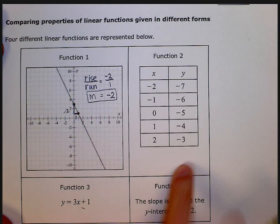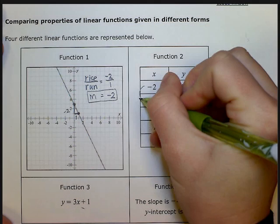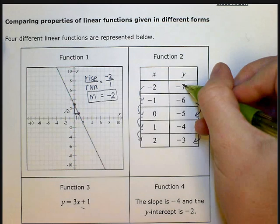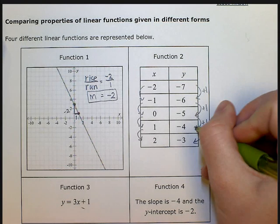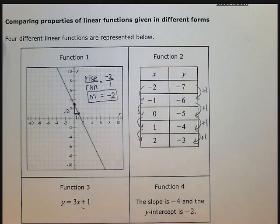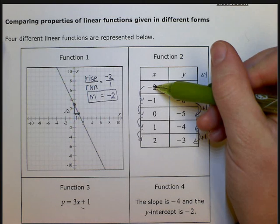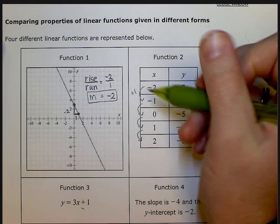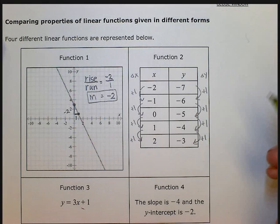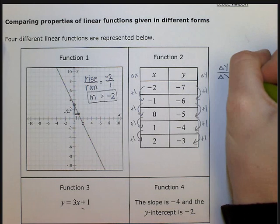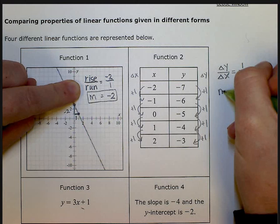Now let's move over to our table. What we want to do is find our rise, which is our change in y, over our change in x. I get from negative 7 to negative 6 by adding 1, negative 6 to negative 5 by adding 1, from negative 5 to negative 4 by adding 1, and from negative 4 to negative 3 by adding 1. So my change in y is adding 1, a positive 1. Now let's find my change in x. I go from negative 2 to negative 1, that's adding 1. Negative 1 to 0 by adding 1, 0 to 1 by adding 1, and 1 to 2 by adding 1. So my change in x is also 1. So my change in y over change in x, which is the same as rise over run, is positive 1 over positive 1. So my slope in my chart is a positive 1.